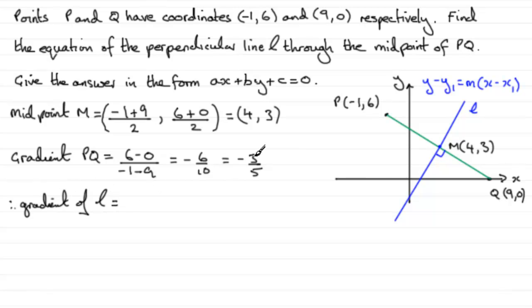And we should know then that the product of the two gradients comes to minus 1. That is, if we multiply them together, we get minus 1. And this is a simple rule.